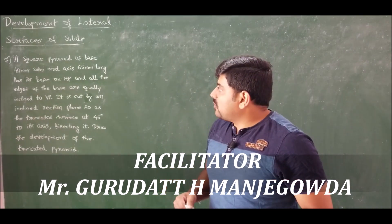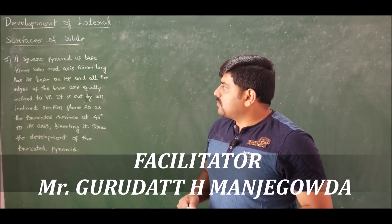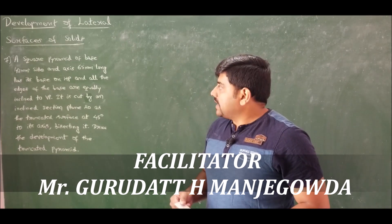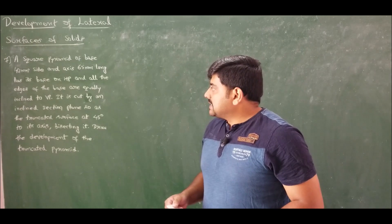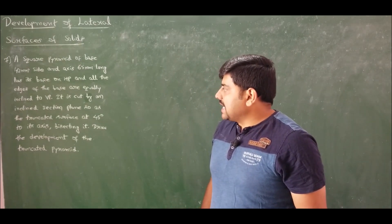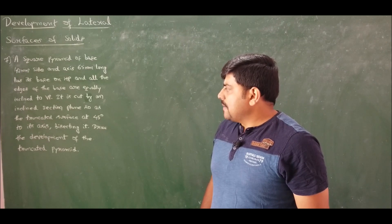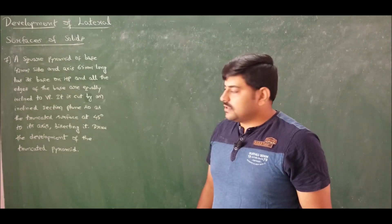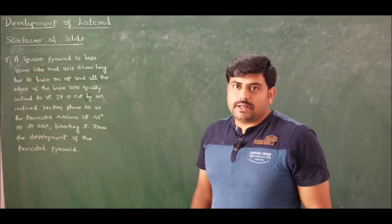Moving on, we have a square pyramid of base 40mm side and axis 65mm long with its base on HP and all the edges of the base equally inclined to VP. It is cut by an inclined section plane so that the truncated surface is at 45 degrees to its axis, bisecting it. Draw the development of the truncated pyramid.